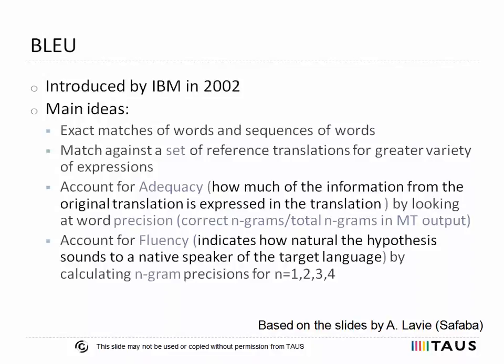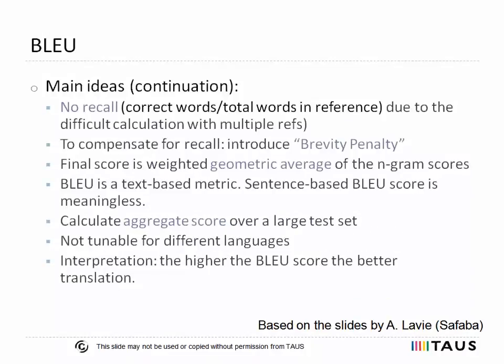The second measure BLEU considers is fluency. This indicates how natural the hypothesis sounds to a native speaker of the target language and is estimated by calculating n-gram precision, which is the number of n-grams from any reference sentences that are found in the translated sentence. BLEU is mainly a precision metric. Recall, which is the ratio between the number of correctly translated words to the total words in the reference, is only taken into account in a very simple way by considering sentence lengths. This means that long sentences are penalized and short sentences tend to be marked up. For this reason, a brevity penalty component was introduced to BLEU.